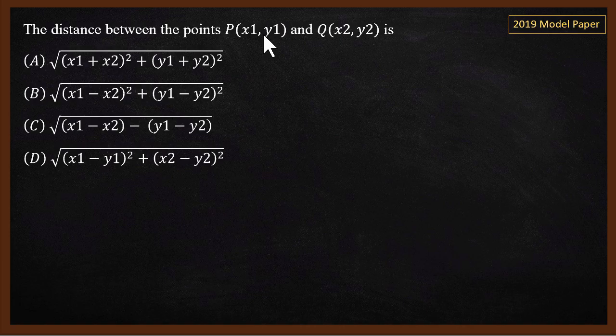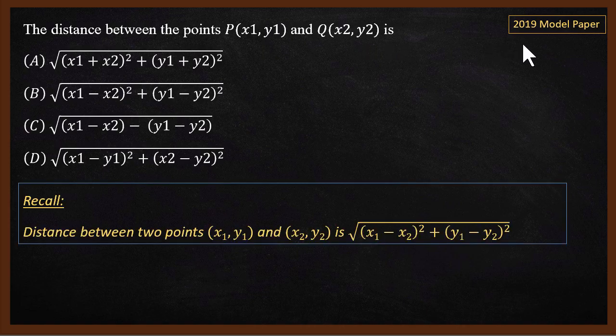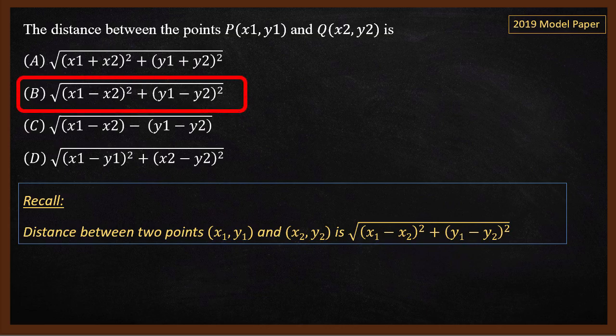Next question: illustrate the distance formula — this appeared in the 2019 model paper. The distance formula is given by that formula. There is a very good chance that many questions in the paper will be simple formula questions. If you remember the formula, you can straight away select answer B.